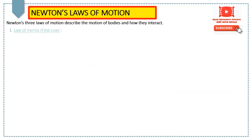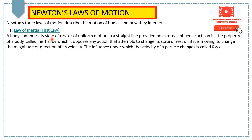The first law, called the law of inertia, states that if a body is at rest or moving at a constant speed in a straight line, it will remain at rest or keep moving in a straight line at constant speed unless it is acted upon by a force. It is called the law of inertia because every body has a property by which it resists the change in its state of rest or motion, and this property is called inertia.